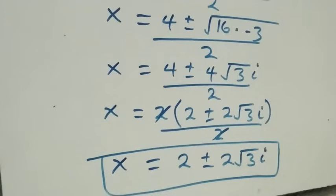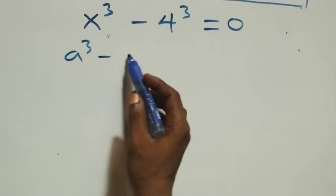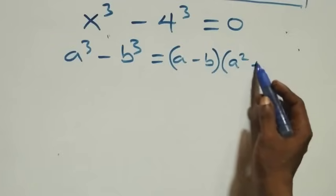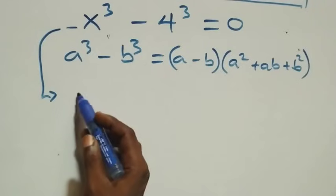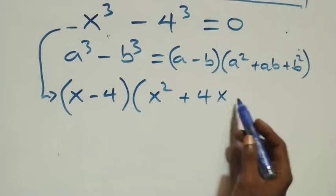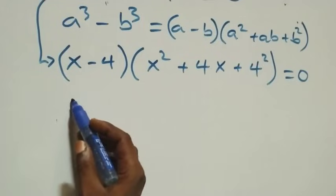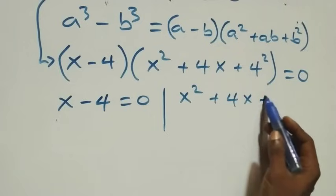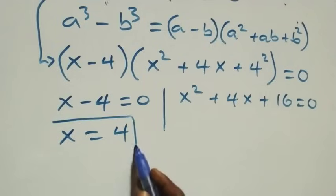For the second case, we use the difference of cubes: a³ − b³ equals (a − b)(a² + ab + b²). This gives us (x − 4)(x² + 4x + 16) equals 0. From x minus 4 equals 0, we get x equals 4, which is a real solution. The other factor gives the quadratic x² + 4x + 16 equals 0.